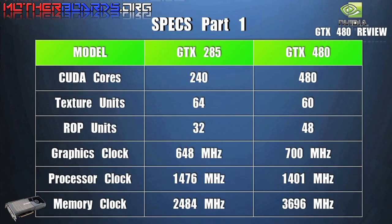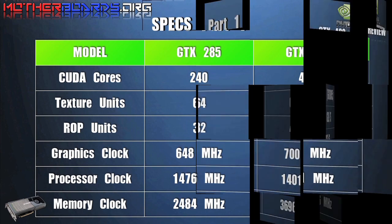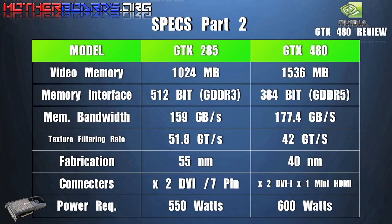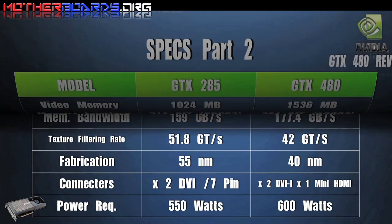Here we show you some comparative specs comparing the GTX 285 to the new GTX 480. As you can see, the card has been vastly improved. Take a look at the memory interface — even though the new card has less actual overall memory, it's faster, being GDDR5 versus GDDR3.